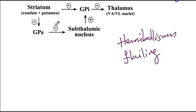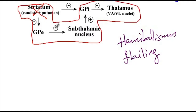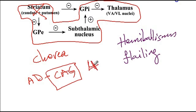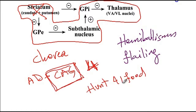A similar condition applies to Huntington's disease, where there is a lesion of the striatum, causing the indirect pathway to stop functioning — the brake is no longer working, and patients present with chorea, meaning rapid random movements. Huntington's disease is an autosomal dominant disorder due to expanded CAG trinucleotide repeats located on chromosome 4. A useful memory aid: 'hunt for food' — Huntington's is due to CAG repeats on chromosome 4. The expanded repeats cause degeneration of the striatum, disabling the indirect pathway and producing chorea.